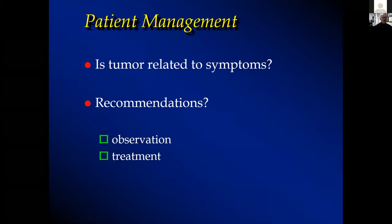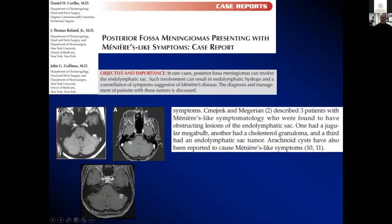I had seen a couple of patients with this abnormality and symptom complex with a very small tumor positioned in the same spot. We recommended initially a period of observation. The tumor grew slightly, so we recommended treatment — a retrosigmoid craniotomy for removal. The reason was the publication by John Golfinos at NYU describing posterior fossa meningiomas presenting with Meniere's-like symptoms: tinnitus, high-frequency hearing loss, and episodes of vertigo.